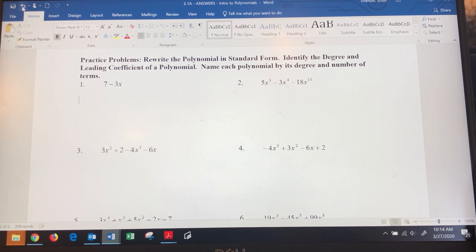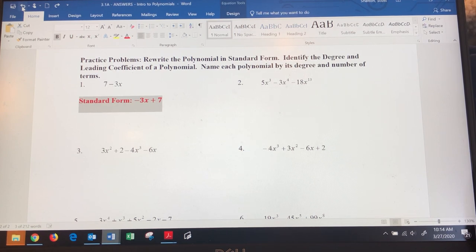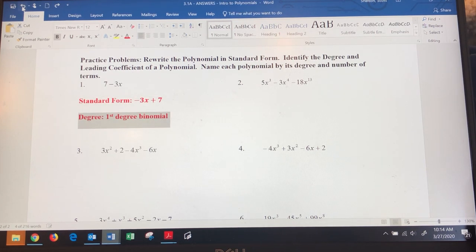Number one: we want to rearrange that. Standard form will be -3x + 7. Standard form just means going in descending order of the exponents from largest to smallest. Once it's in standard form, you can tell the degree. This one's a first degree binomial - there's two terms so it's a binomial, and the leading coefficient is -3.